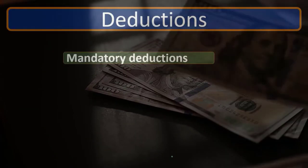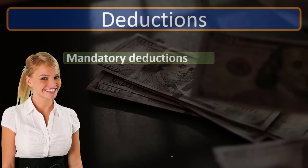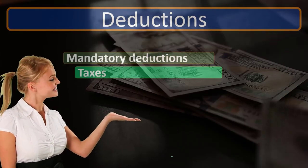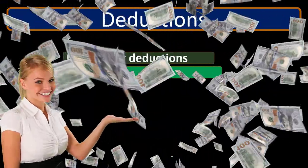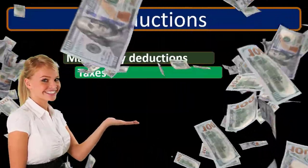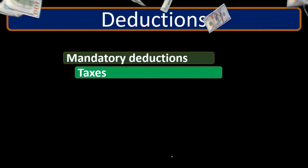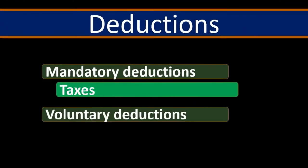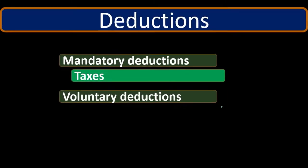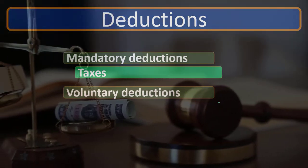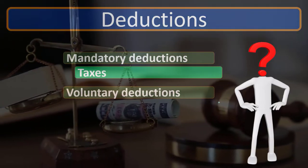The types of deductions are those mandatory deductions including taxes — federal taxes, state taxes, federal income tax, state income tax, Social Security, and Medicare — and then the voluntary types of deductions. Those are generally benefits not mandated by law but often given to employees as an option.